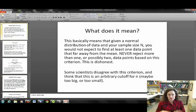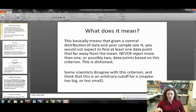Like I said, this means that if your data follows a normal distribution and your sample size is big N, you would not expect to find at least one data point that far from the mean, and so you can reject it. You should never reject more than one or possibly two data points based on this criterion because it's dishonest. If you have that many outliers, then something else is wrong. You took your data incorrectly, you need to repeat your experiment, there's something that you've forgotten to account for, you have some sort of systematic uncertainty, something like that.